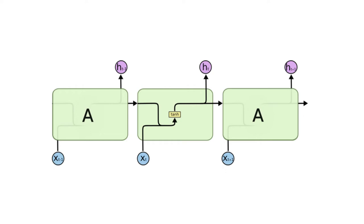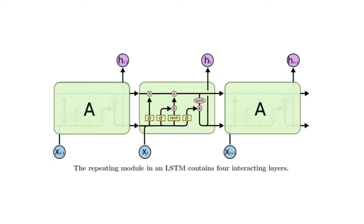All recurrent neural networks have the form of a chain of repeating modules of neural network. In standard RNNs, this repeating module will have a very simple structure such as a single tanh layer. LSTMs also have this chain-like structure, but the repeating module has a different structure. Instead of having a single neural network layer, there are four interacting in a very special way.